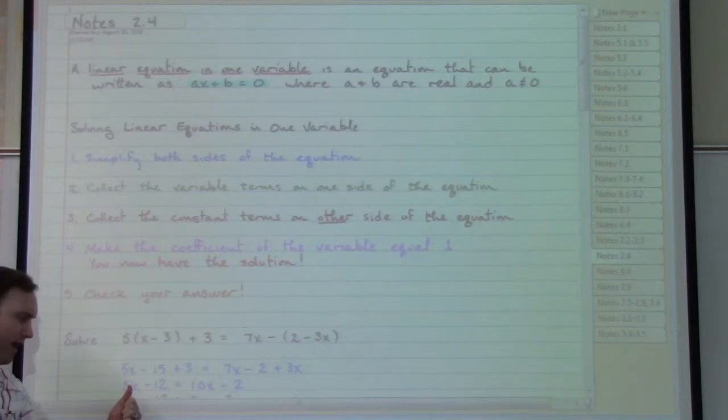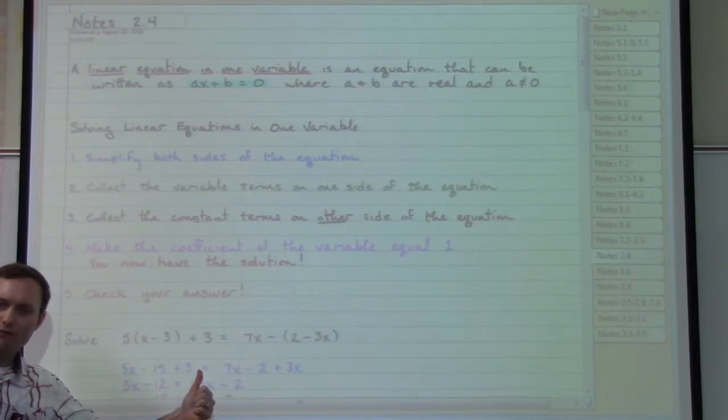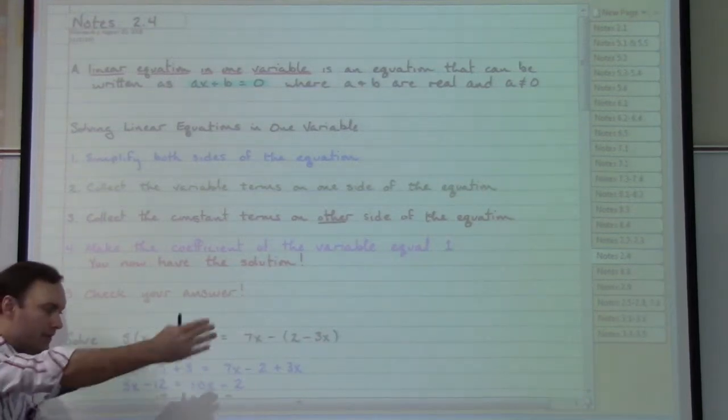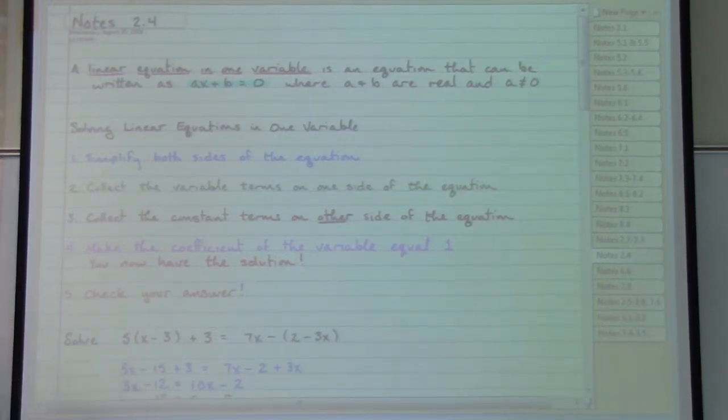My own personal preference is to create only positive numbers in front of my variable. So when I look at 5x and 10x, 10x is bigger. So if I take all of my x stuff and move it over so that it appears on the right side, I will have a positive number appearing in front of the letter x.